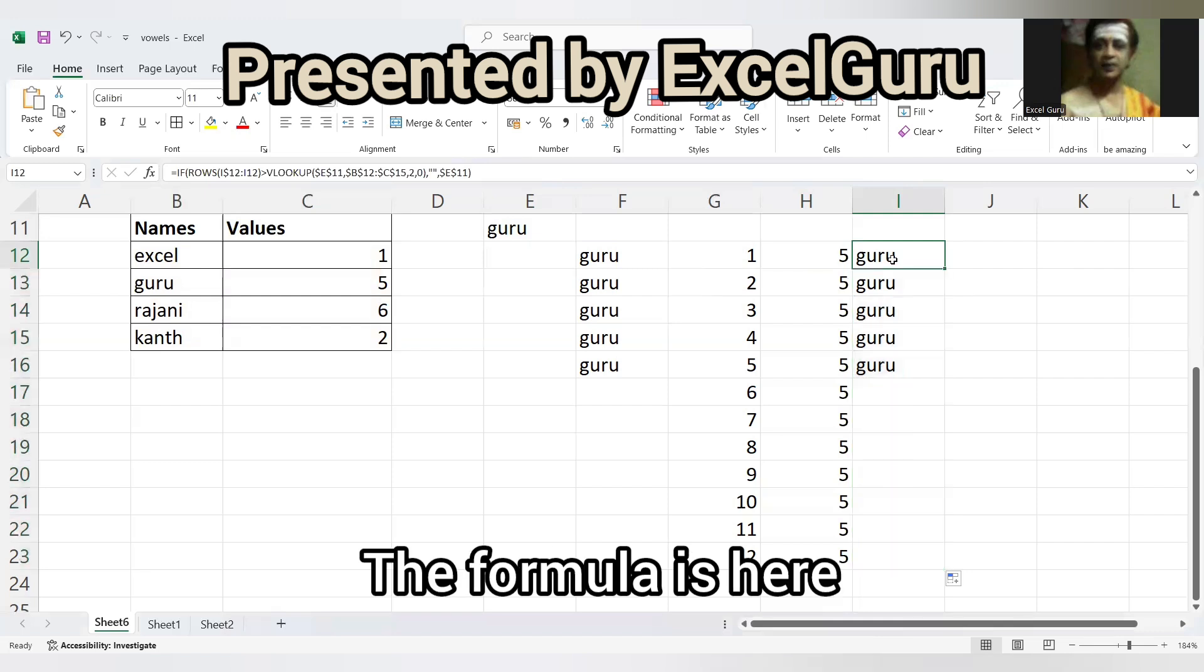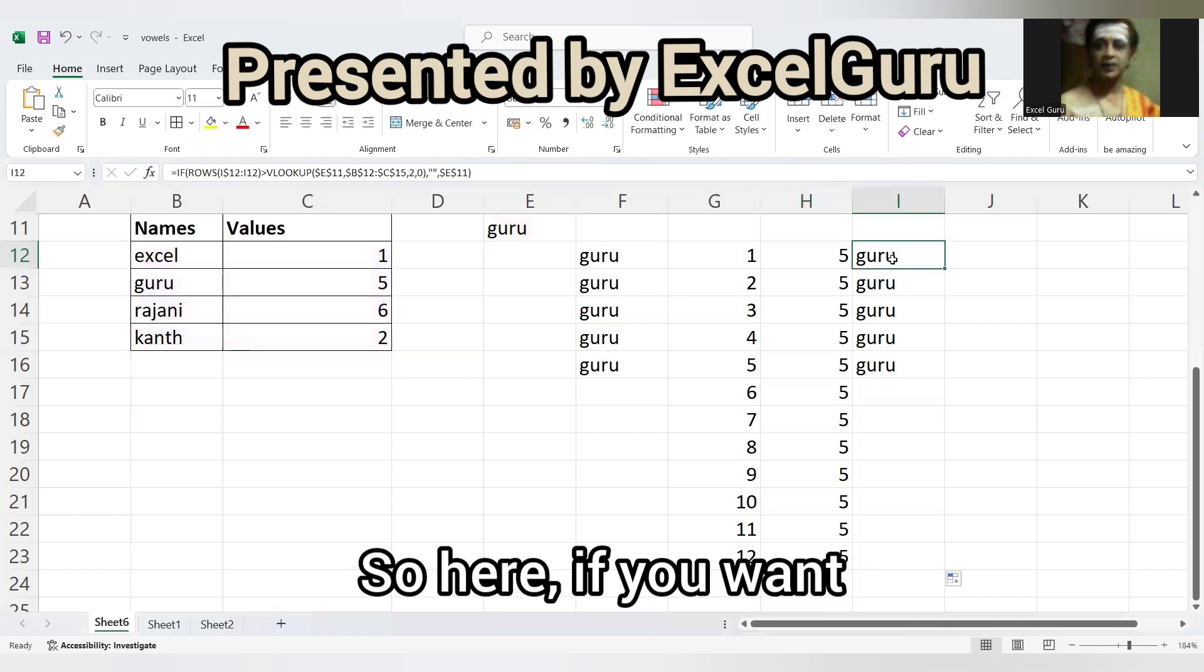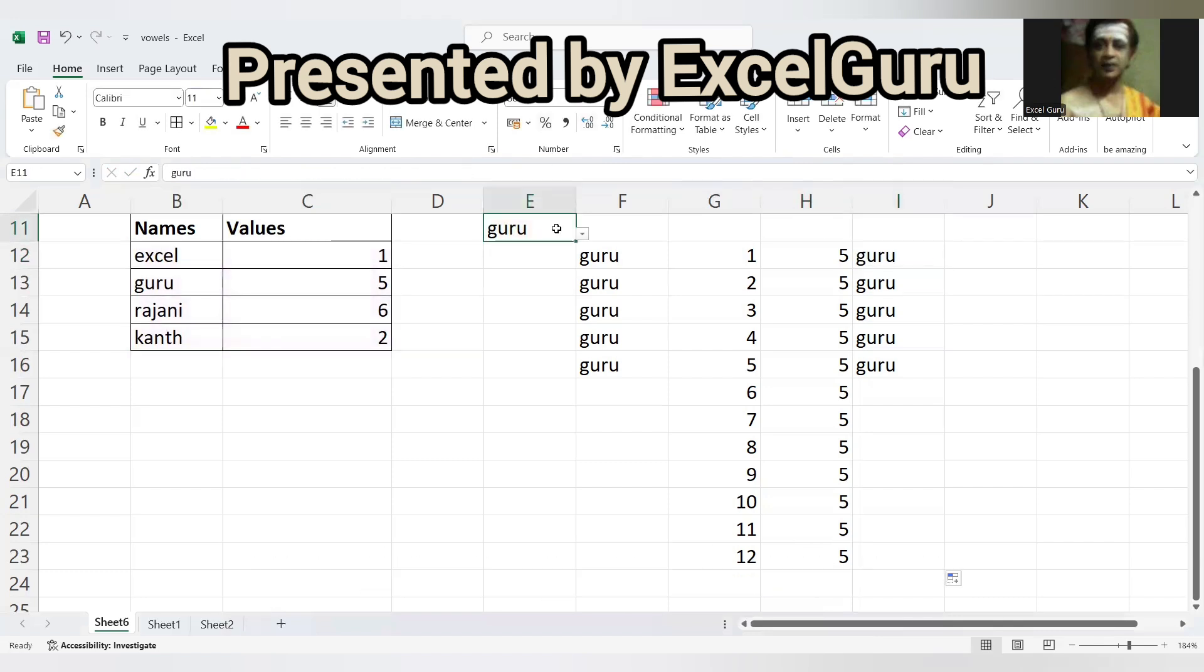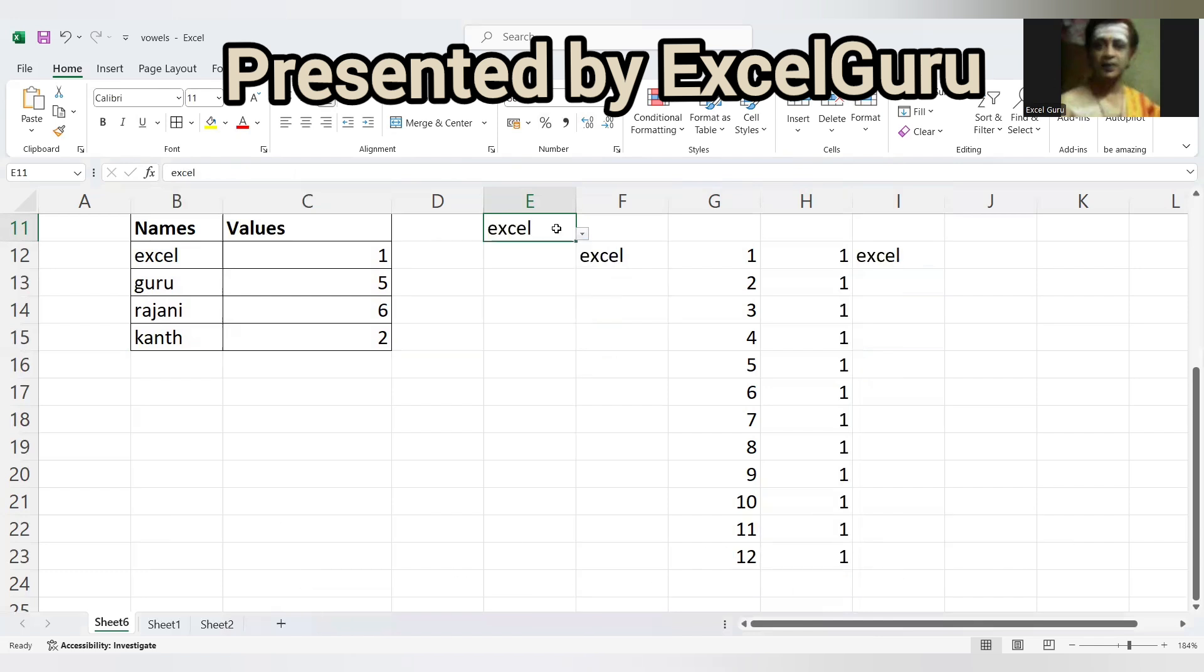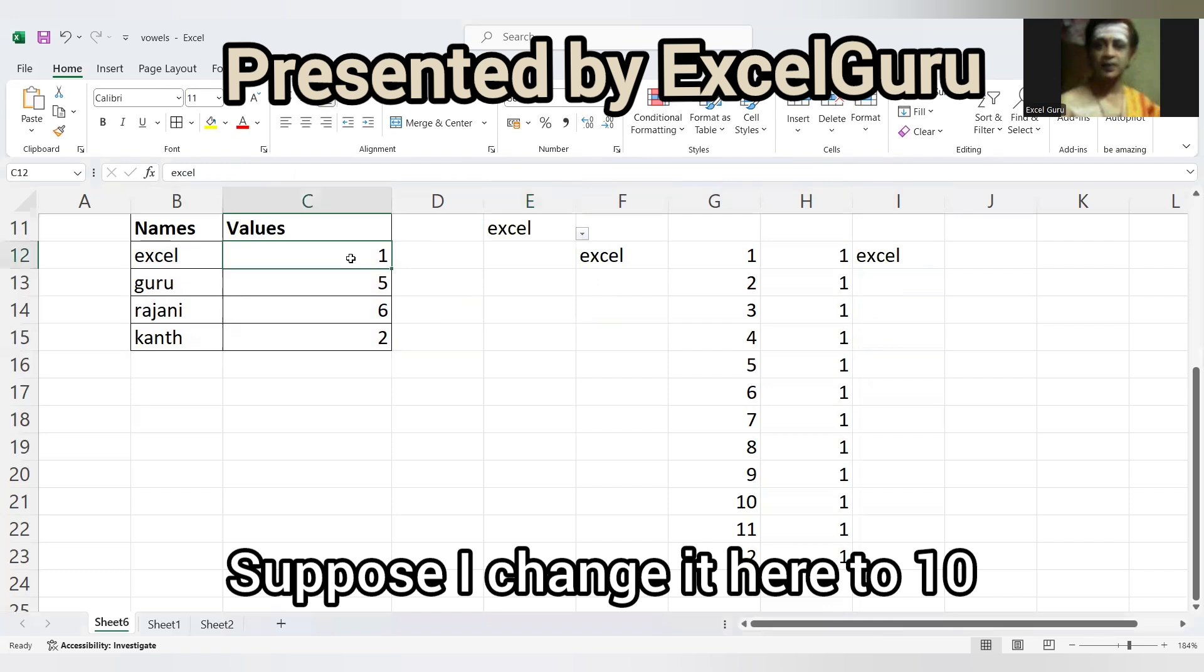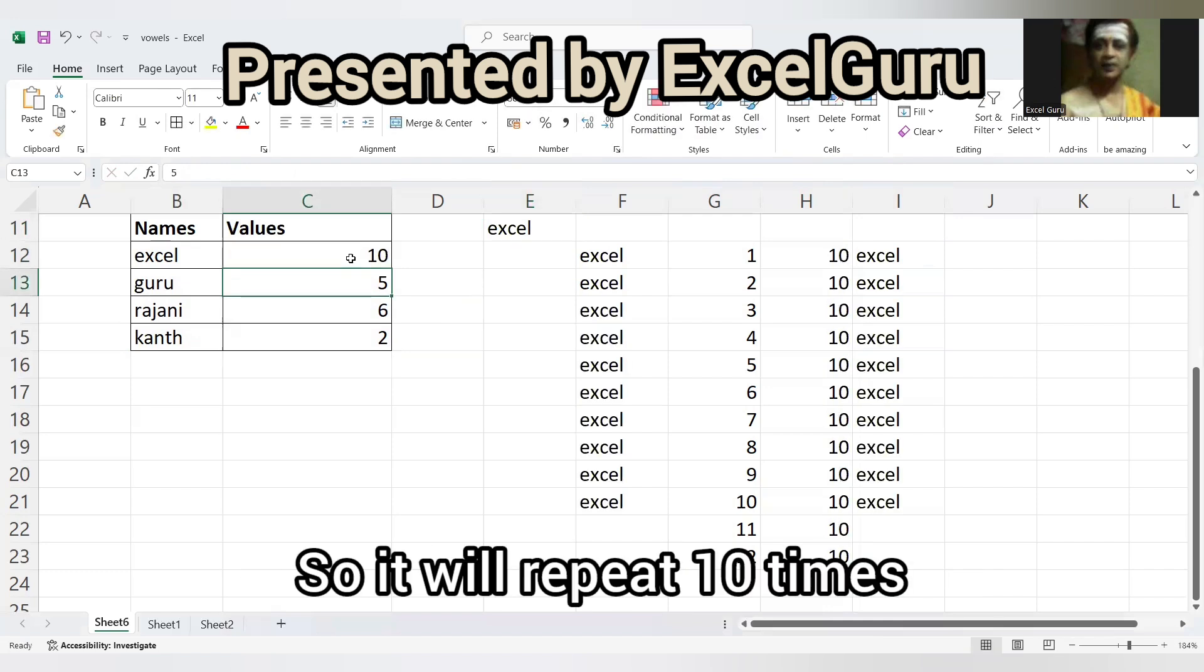So simple formula. So here if you want you can change it from here, from Kant to Rajini, Guru, Excel. I'll try Excel - it has to extract only one value, that is Excel. Suppose you have changed here to 10, it should be dynamic, so it will repeat 10 times.